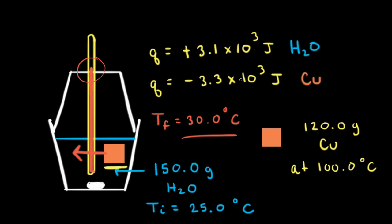Let's look at these two numbers and think about their magnitudes. If our coffee cup calorimeter were a perfect insulator, the magnitudes would be the same — something like 3.3 times 10 to the third joules for both. Since these two numbers are not the same, we can see that more heat was lost from the copper than was gained by the water, which means some of the energy could have escaped the calorimeter to the environment.